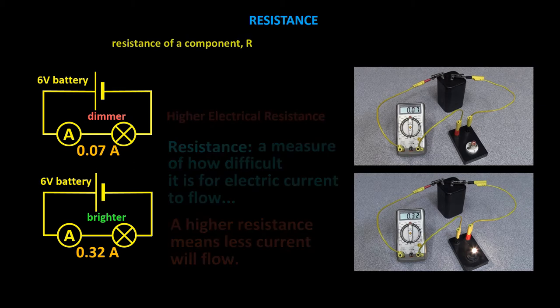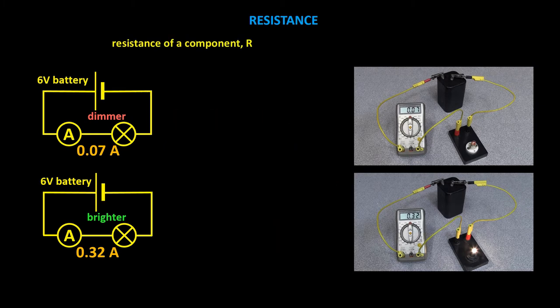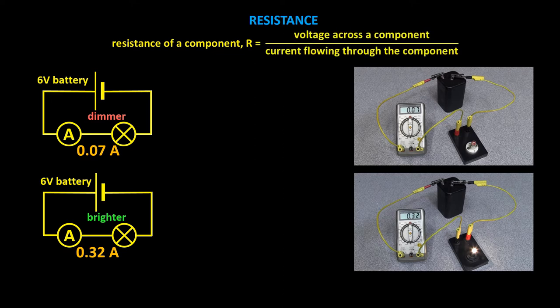Mathematically, the resistance of a component given the symbol R equals the voltage across a component divided by the current flowing through the component. In symbols, R equals V over I. So, the resistance of the dimmer light globe R equals V divided by I which equals 6 volts, the voltage of the battery, over 0.07 amps, which equals 86.